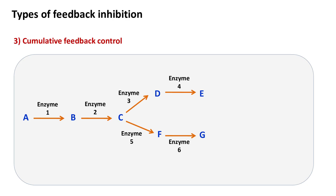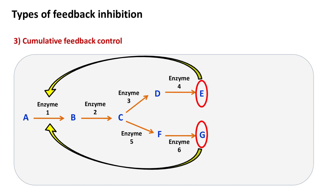Number 3: Cumulative feedback control. In this type of feedback control mechanism, the end product of the pathway inhibits the first enzyme of the pathway by a certain percentage independently.